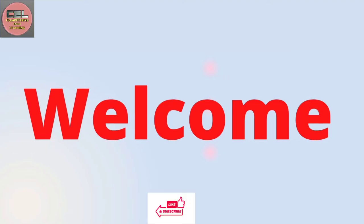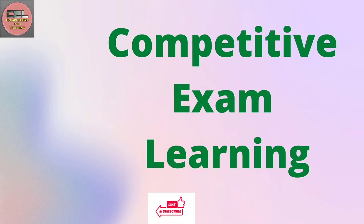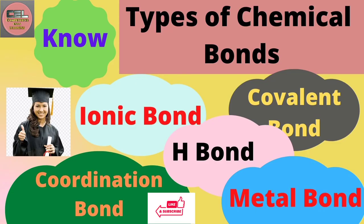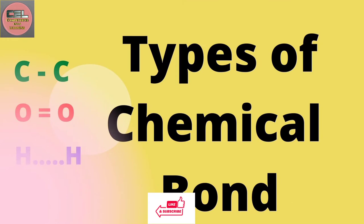Welcome to the competitive exam learning channel. Today you are going to study types of chemical bonding. In the previous class you studied the basic concepts. There are types of bonding: ionic bond, covalent bond, hydrogen bond, coordination bond, and metallic bond. In this class you will study how they form.